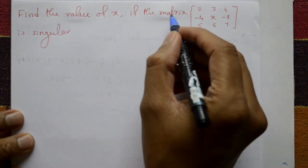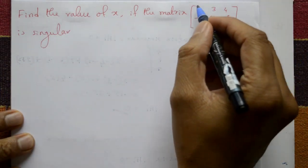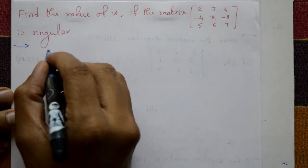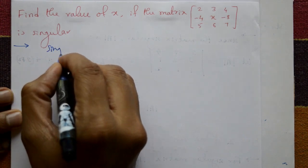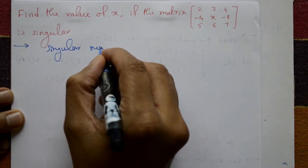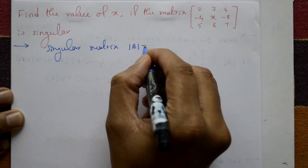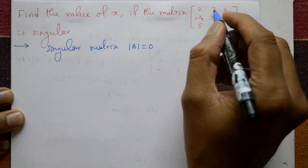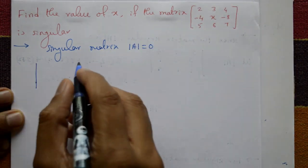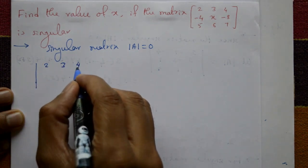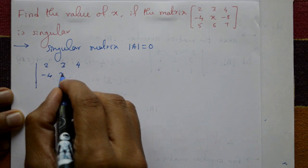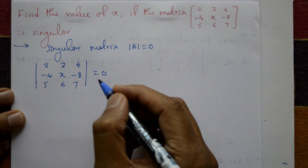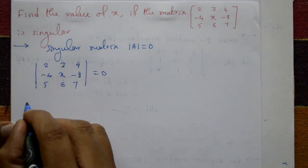Find the value of x if matrix A is singular. A singular matrix means the determinant of A is equal to zero. Taking the determinant of A with entries 2, 3, 4, -4, x, -8, 5, 6, 7, that is equal to zero. Now expand this determinant.